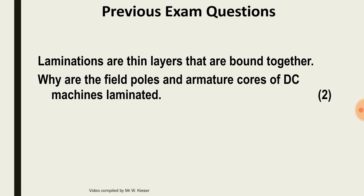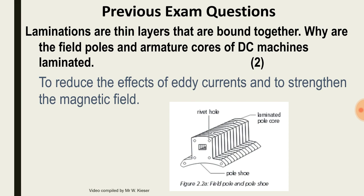Now let's have a look at some previous exam questions on this specific chapter. Laminations are thin layers bound together. Why are field poles and armature coils of DC machines laminated? To reduce the effects of eddy currents and to strengthen the magnetic field.